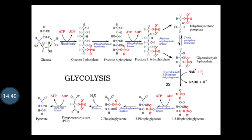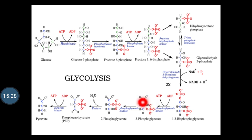Step 7 is the transfer of phosphate from 1,3-bisphosphoglycerate to ADP. The 1,3-bisphosphoglycerate is converted to 3-phosphoglycerate. This is the ATP-generating step of glycolysis, involving the transfer of a phosphate group from 1,3-bisphosphoglycerate to ADP by the enzyme phosphoglycerate kinase, thus producing ATP and 3-phosphoglycerate. Since 2 moles of 1,3-bisphosphoglycerate are formed from 1 mole of glucose, 2 ATPs are generated in this step.